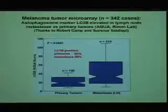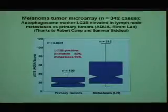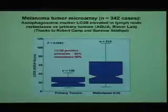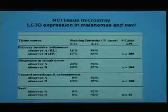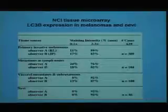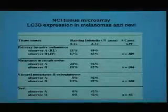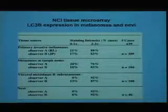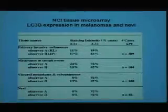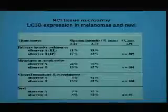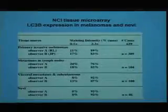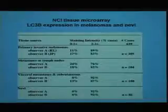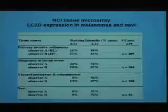There was a much higher expression in metastatic melanoma as opposed to primary melanoma cases. We also found very high LC3B expression in melanomas by immunohistochemistry on the NCI tissue microarray. The majority of primary melanomas, as well as metastatic melanomas, were positive 2 and 3 plus for anti-LC3B staining. Unlike AQUA, we did not find increased staining in metastatic melanomas compared to primary melanomas by IHC.